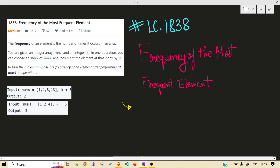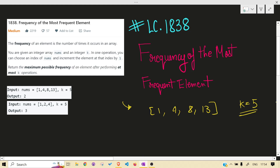What the problem is asking is: you are given an array and what you have to do is get the maximum possible frequency. It is not possible in the initial state, but you are given a value k - using k you can increase a number by one.